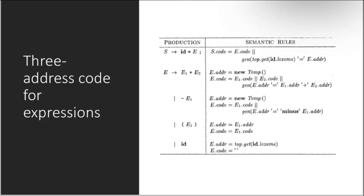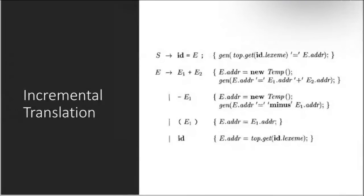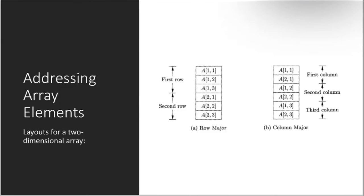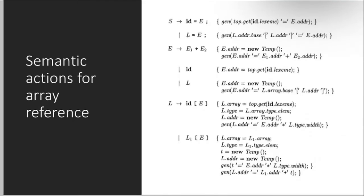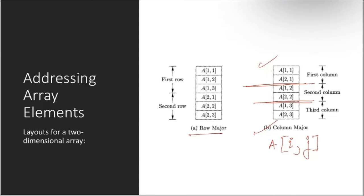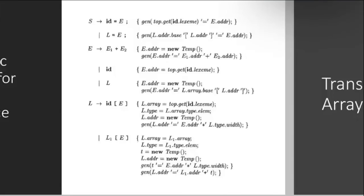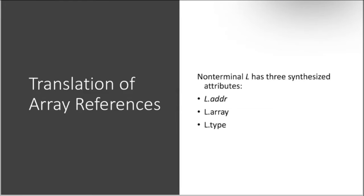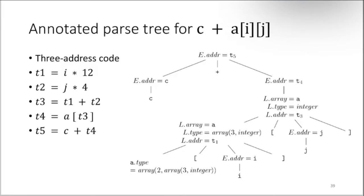Three-address code for expressions: given an expression, we can develop three-address code. There is also incremental translation and address of array elements. For a 2D array, although in reality the array is stored in a 1D block, we can access elements like a[i][j]. This includes semantic actions for array reference translation, using l.address, l.array, and l.type.